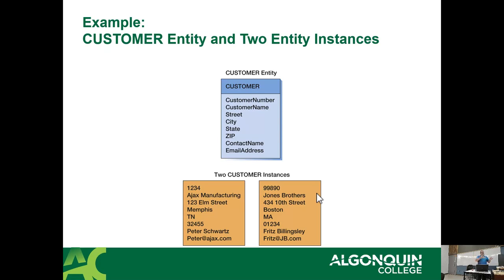When you are being put into Algonquin's student information system, they track very specific things: your name, date of birth, address, phone number, SIN number if you're Canadian, student visa number if you're not. All these available attributes are there for every student, whether they use them all or not. Each instance of every student will fill in the appropriate attributes as applicable. Some attributes like given name are universal, while others like family name may vary globally.